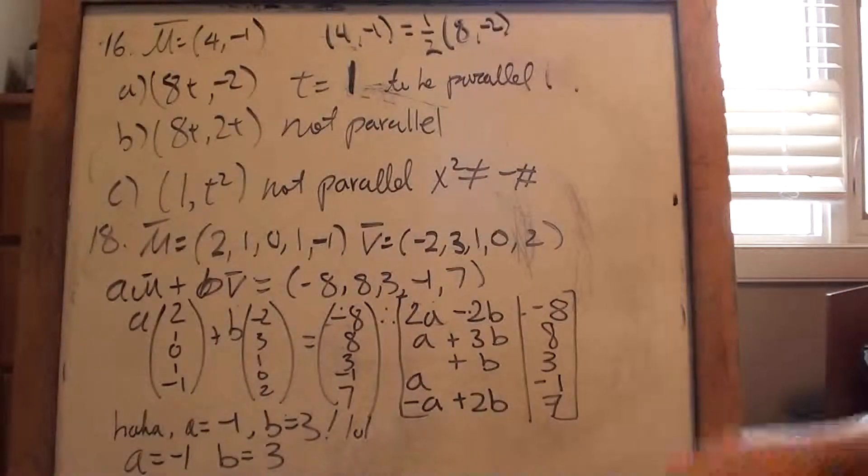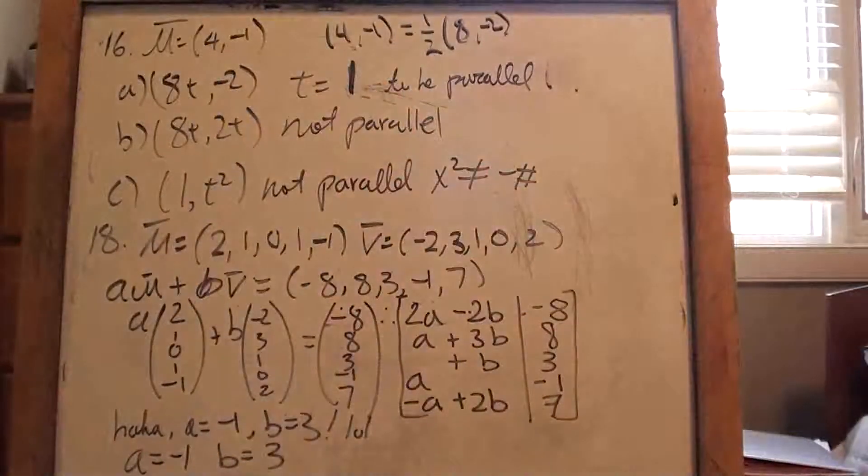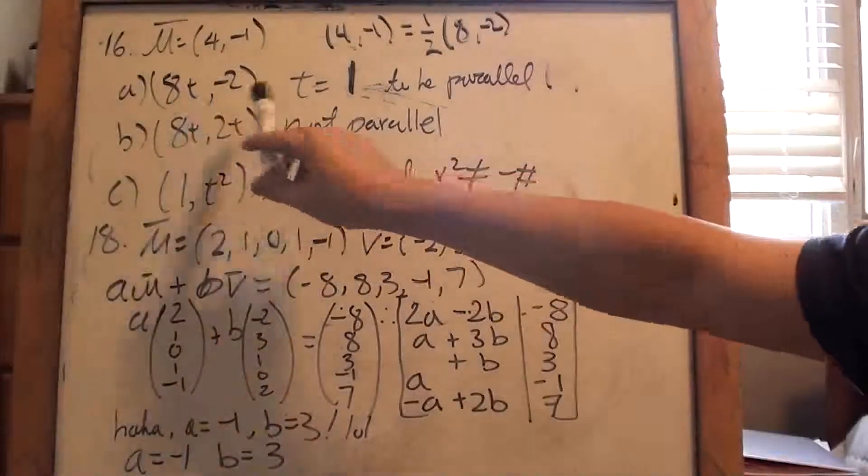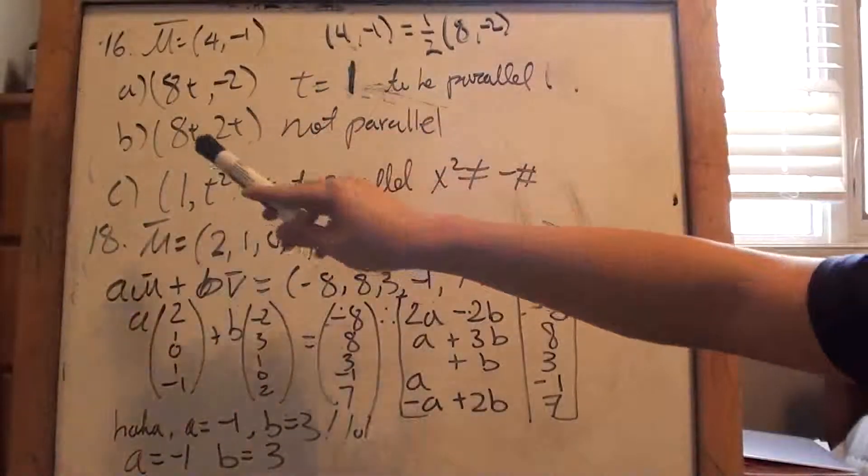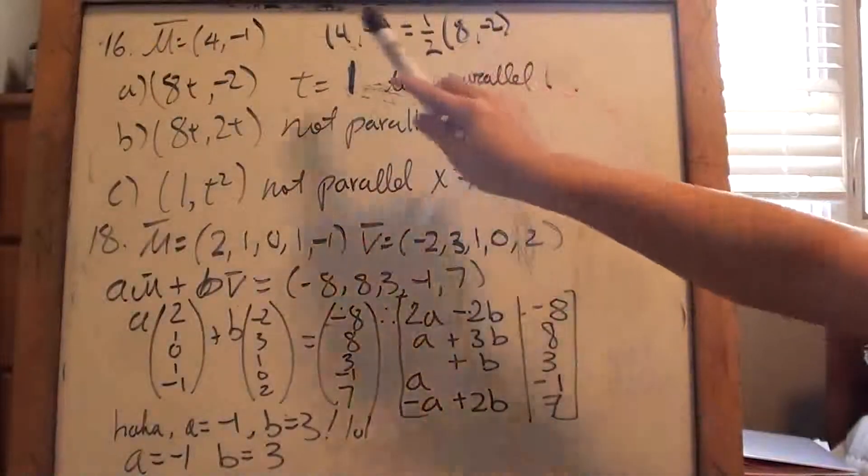So I just want to make sure this vector is a multiple of this vector, right? So that's all I did. Okay, so here I want to say, well, t equals to 1 to be parallel. The reason why? Because if I plug in 1 here, it's going to be 8, negative 2, right? 8, negative 2, 4, negative 1.